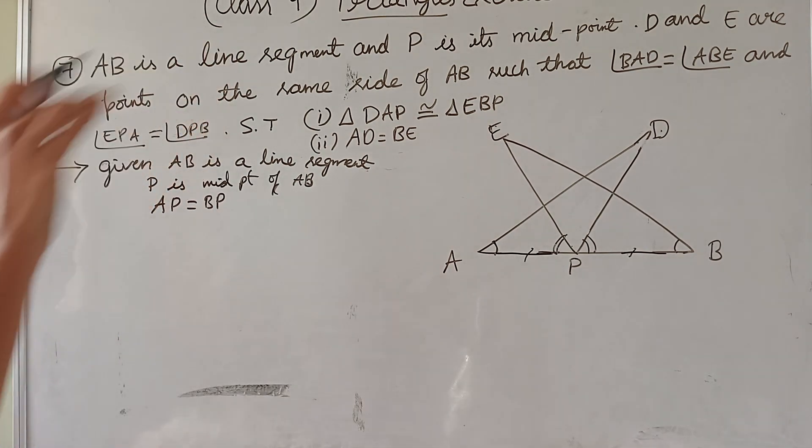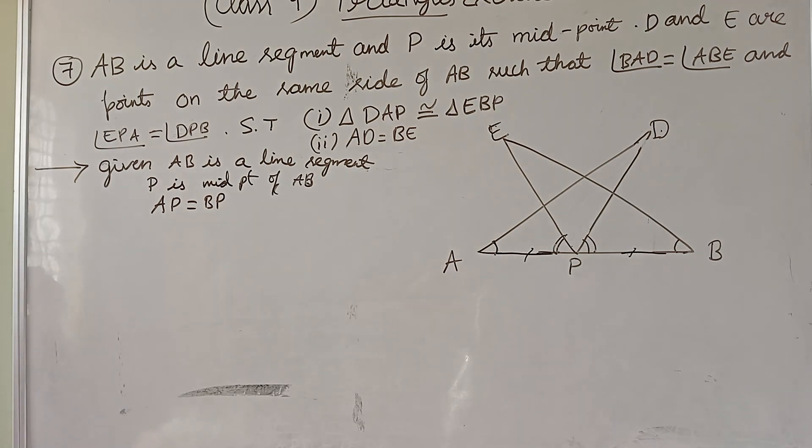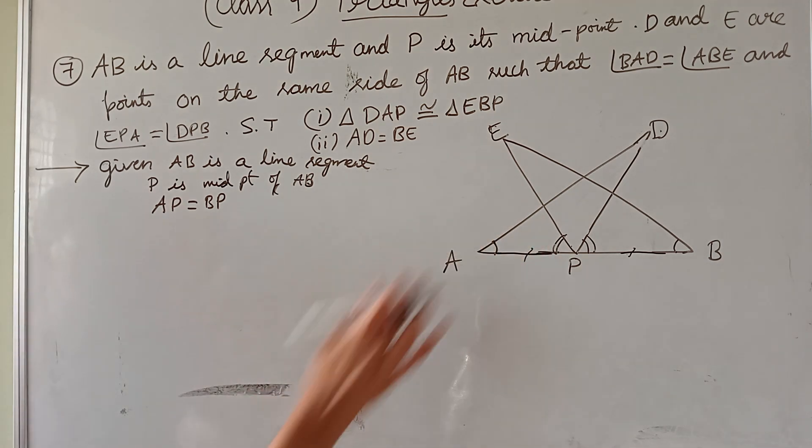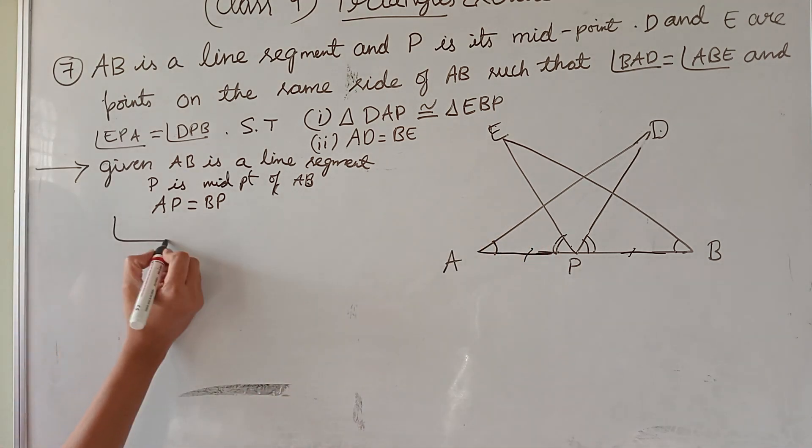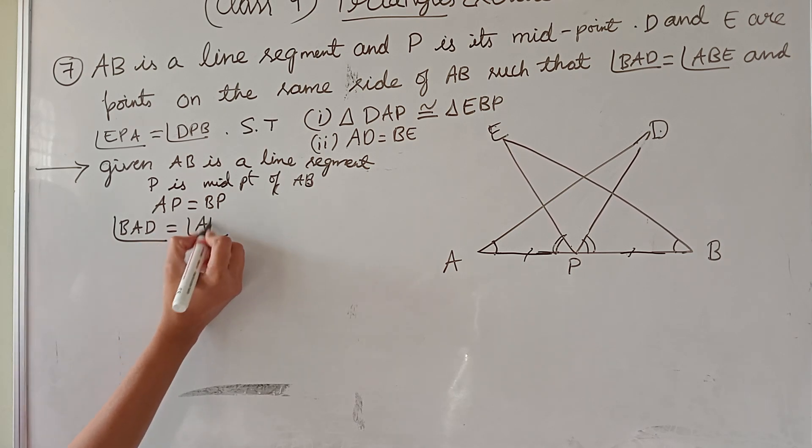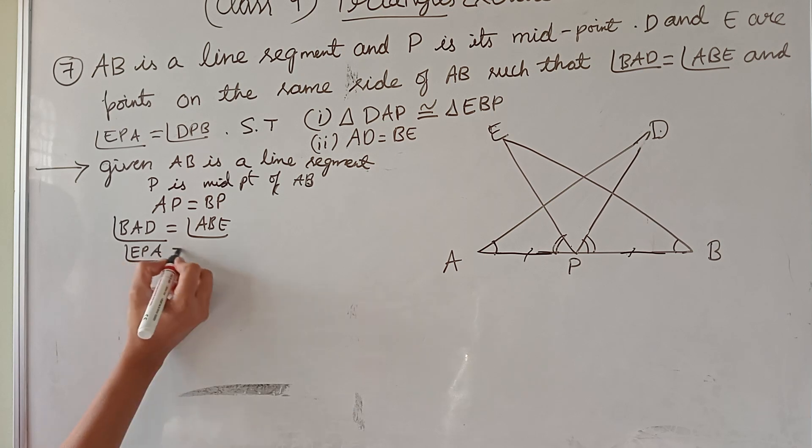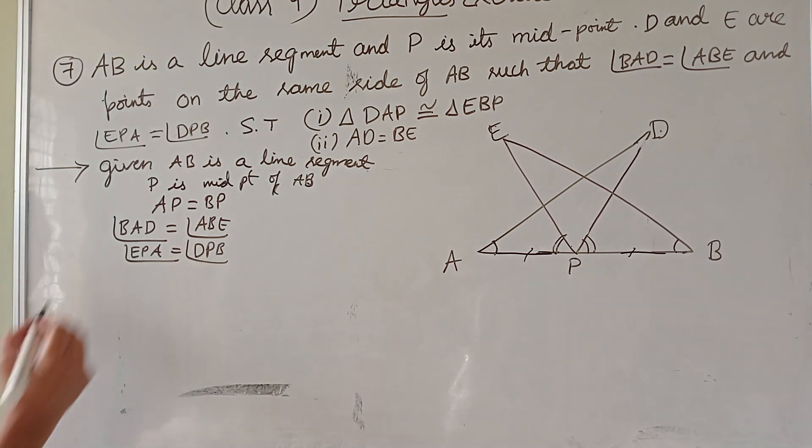D and E are the points on the same side of AB. Angles they have given: angle BAD equal to ABE, and another angle EPA equal to DPB.